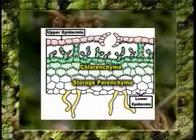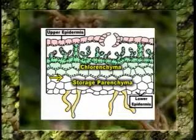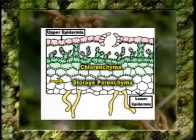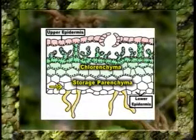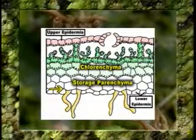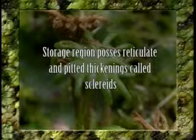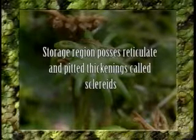The storage region lies on the ventral side of the thallus; it is thickest in the center and gradually becomes thin towards the margins. The tissue consists of compactly arranged parenchymatous isodiametric cells rich in starch and proteins, with no intercellular spaces. A few cells are filled with mucilage or oil bodies. Some cells of the storage region possess reticulate and pitted thickenings and are called sclerids. In some species the central midrib region contains elongated mucilage tubes which prevent cells from desiccation. The ventral side is covered by lower epidermis made of non-green quadrate cells, from which arise rhizoids and scales.